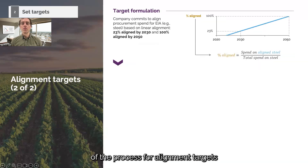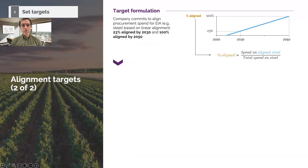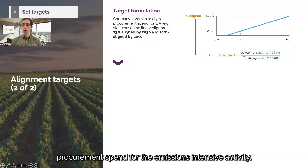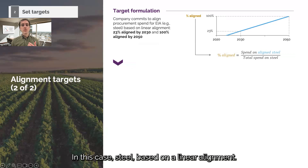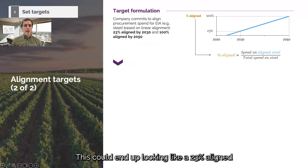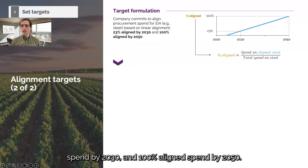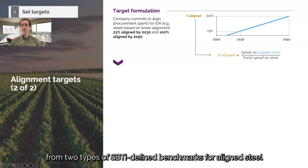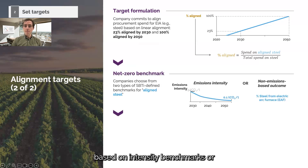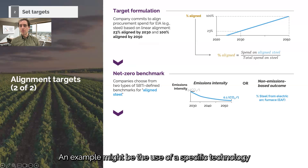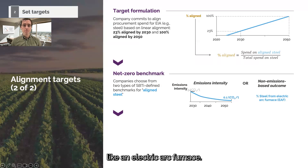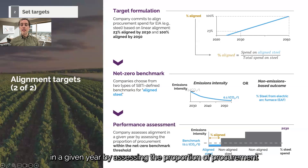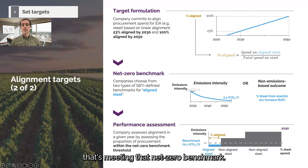Here's an illustrative example of the alignment target process using an auto company purchasing steel. Firstly, the company commits to align procurement spend for the emissions intensive activity — in this case steel — based on a linear alignment. This could look like 23% aligned spend by 2030 and 100% aligned spend by 2050. The company can choose from two types of SBTi-defined benchmarks for aligned steel: intensity benchmarks or non-emissions-based indicators, which will be explored in the consultation. An example might be the use of a specific technology like an electric arc furnace. Companies then assess alignment in a given year by assessing the proportion of procurement that's meeting the net zero benchmark.